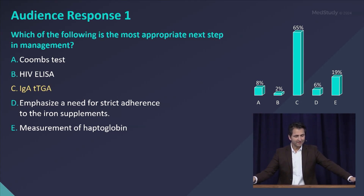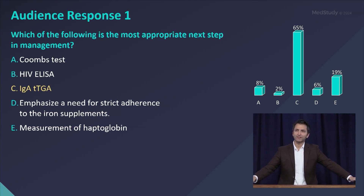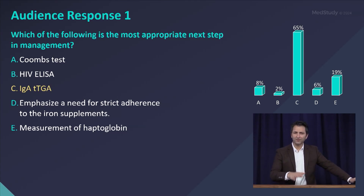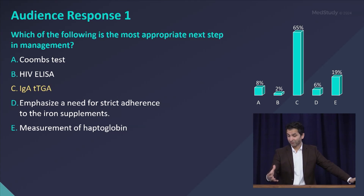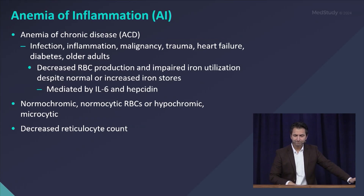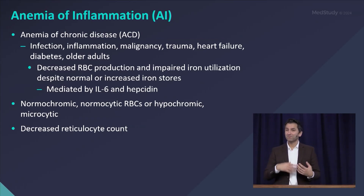The second most popular answer was measurement of haptoglobin, which would be appropriate if you were considering hemolysis. This particular case doesn't really have what I call the 'hemolysis flavor.' I'll talk in a few minutes about what that flavor looks like — when you really should be thinking about hemolysis — but this is not it. Continuing our conversation on anemias that are often microcytic, let's compare and contrast anemia of inflammation, previously called anemia of chronic disease.